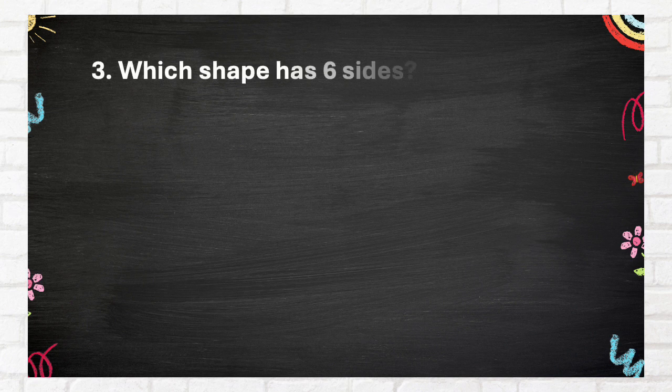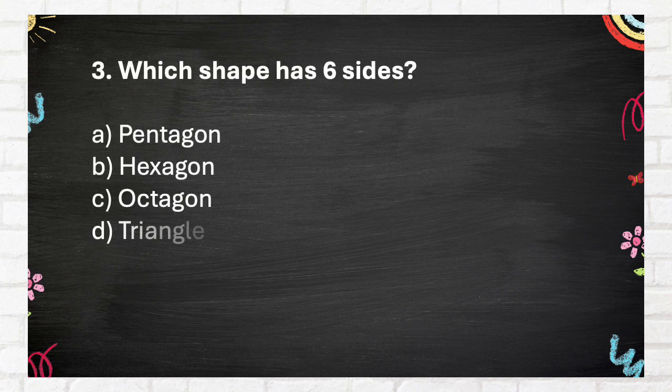Question number 3. Which shape has six sides? Again, which shape has six sides? A. Pentagon. B. Hexagon. C. Octagon. D. Triangle.